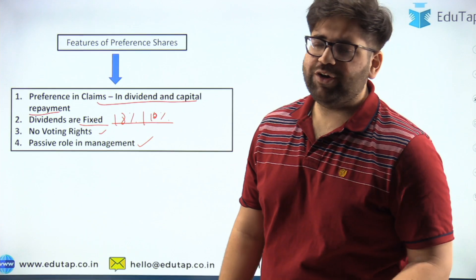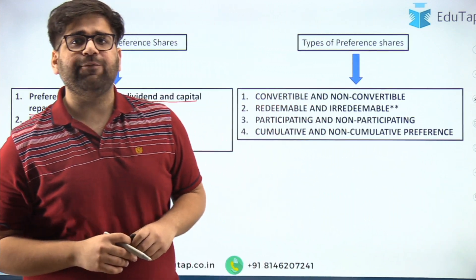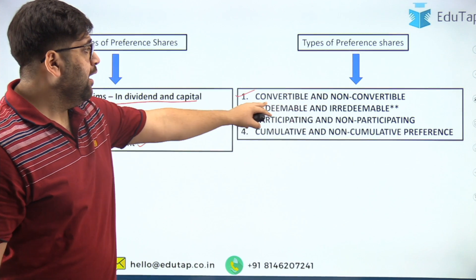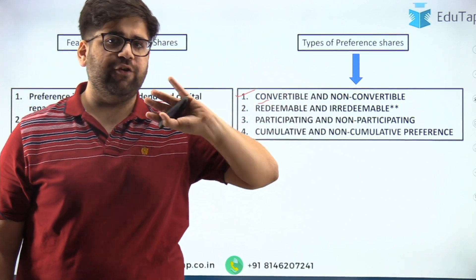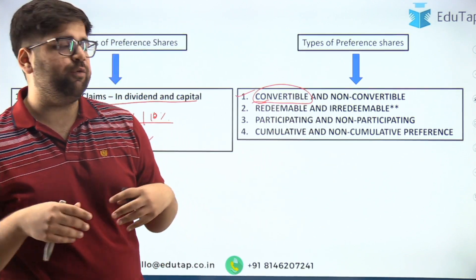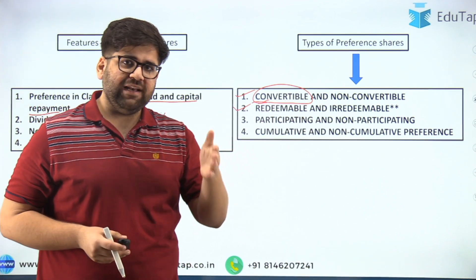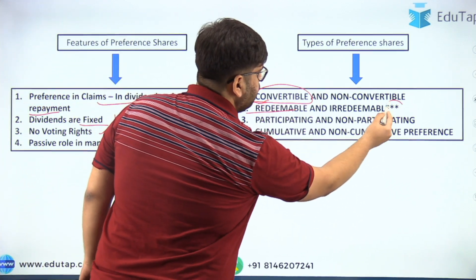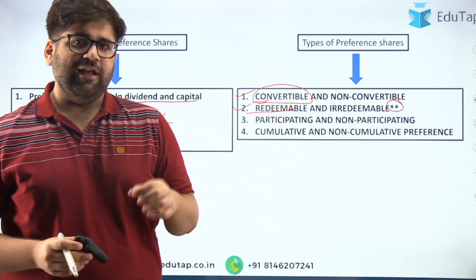With no voting rights, preference shareholders have a passive role in management and are known as passive owners of the company. Now, the types of preference shares: first, convertible and non-convertible — under convertible preference shares, the share can be converted into equity capital after a certain period of time, while under non-convertible you do not have that option. Second, redeemable and irredeemable — preference shares come with a particular period of time, after which you get your capital back from the company. I have marked redeemable with asterisks, which I will explain later in the video.